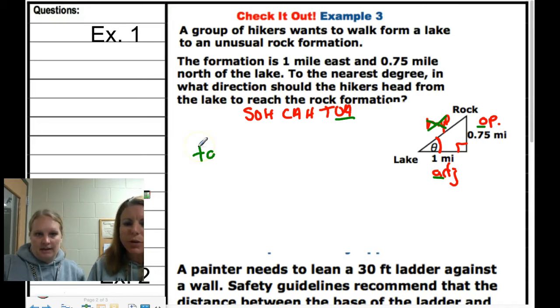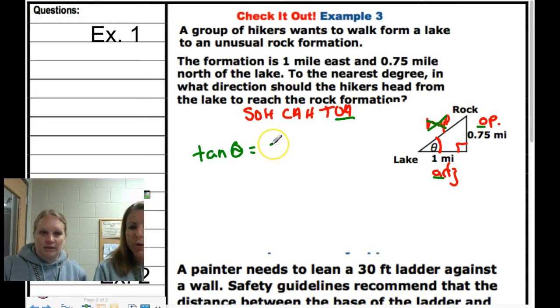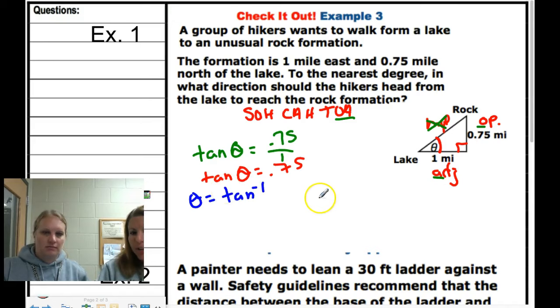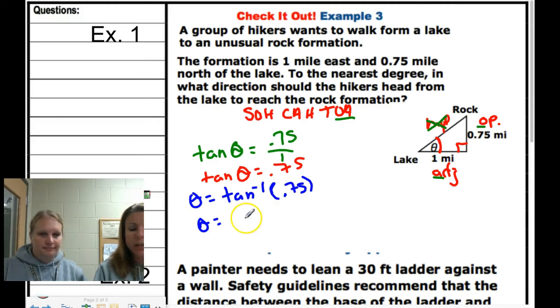Tangent of theta is equal to our opposite, 0.75, over adjacent, 1. That's just 0.75. Now we're going to solve for theta by changing our notation. Theta equals tan^(-1)(0.75). We plug that into our calculator, and we will show you in class. When you do that, you get theta equals 37 degrees.